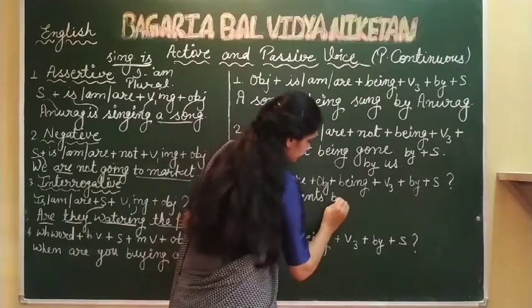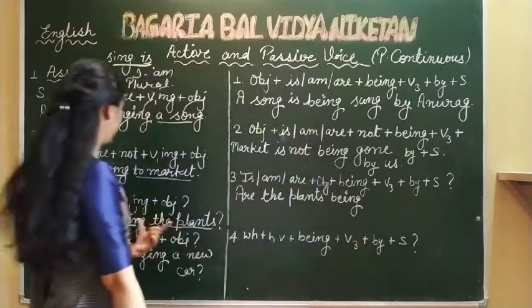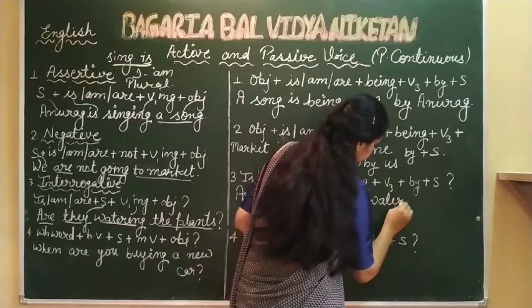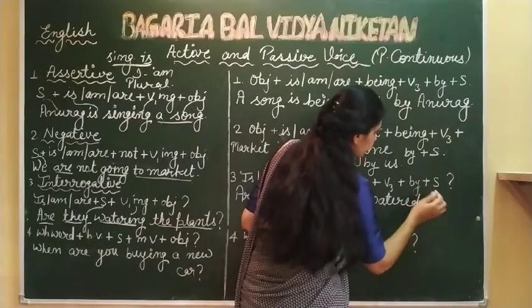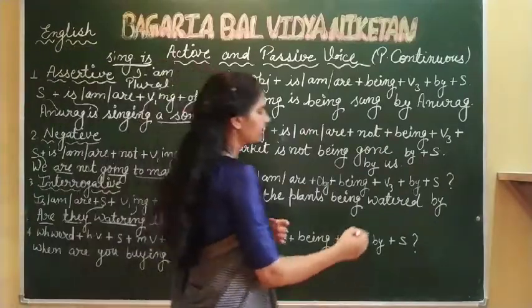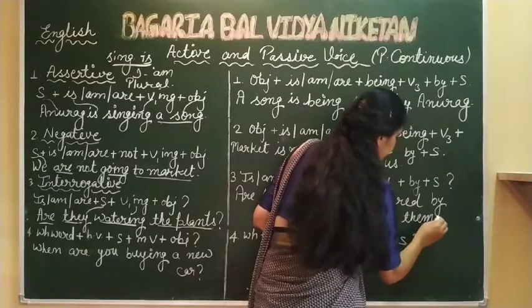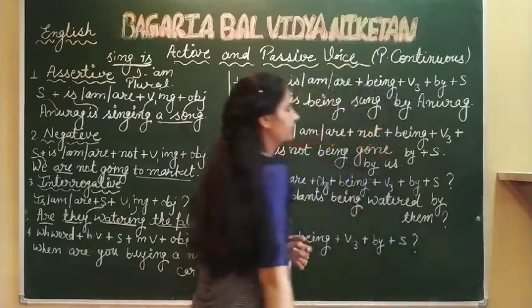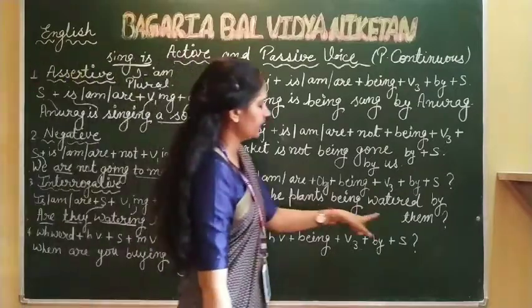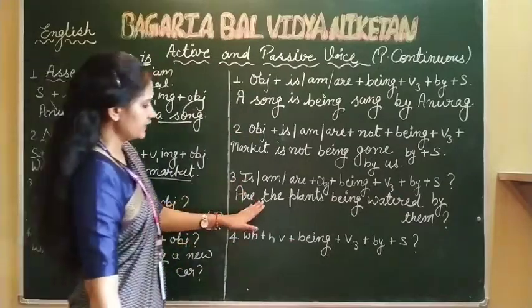After that 'in object' - this is the object. The plants are. After that 'being' as it is I have to write. Being. Verb ki third form - watering - watered. W-A-T-E-R-E-D, watered. After that 'by' as it is put, and then 'they'. 'They' - we have learned in pronouns - becomes 'them' in the end form. So my sentence is: Are the plants being watered by them?